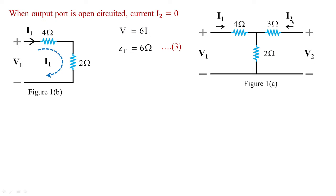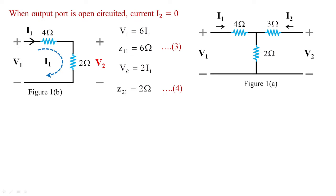The current is 0 at the output port but the voltage is not 0. Voltage v2 is measured across the 2 ohms element, and since i1 flows through it, v2 = 2·i1. Therefore the forward transfer impedance z21 = v2/i1 (with output port open) equals 2 ohms. This gives us equations 3 and 4.